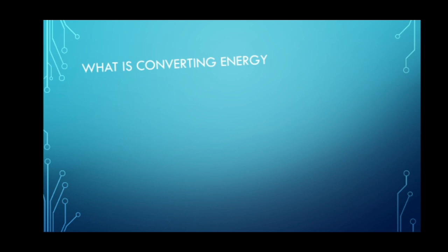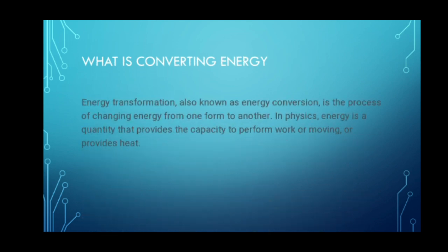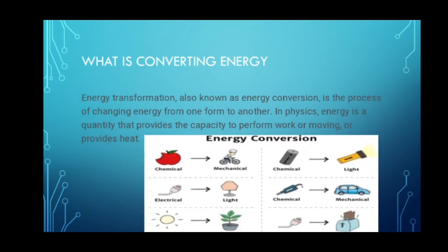Now we have converting energy. Energy transformation, also known as energy conversion, is the process of changing energy from one form to another. For example, we can convert chemical to mechanical, electrical to light, light to chemical, and chemical to light. From the image: food (chemical) to mechanical, electrical to light, light to chemical, chemical to mechanical, and electrical to heat.